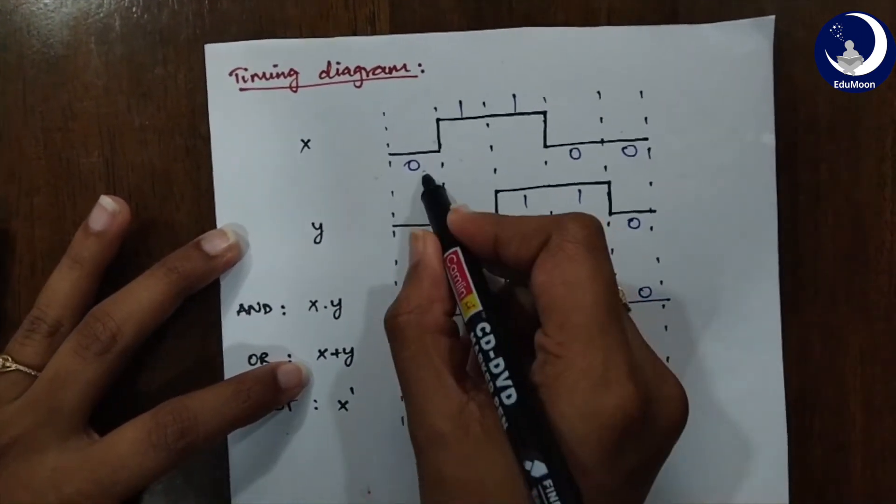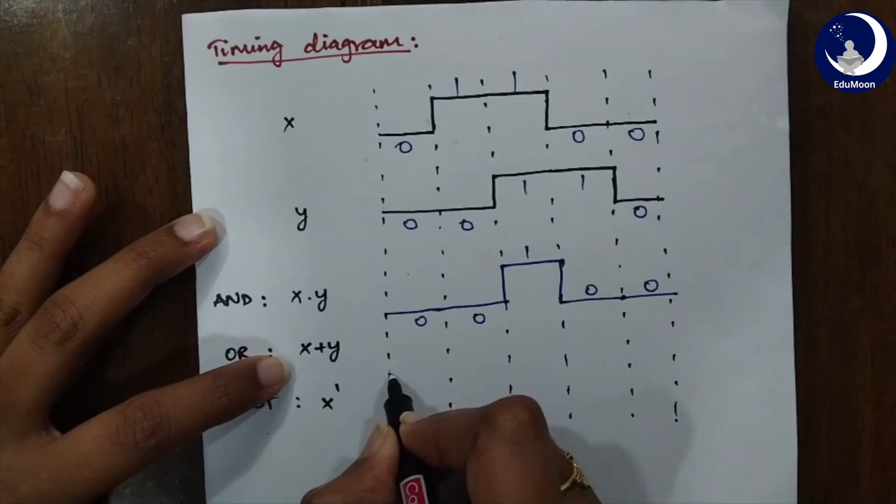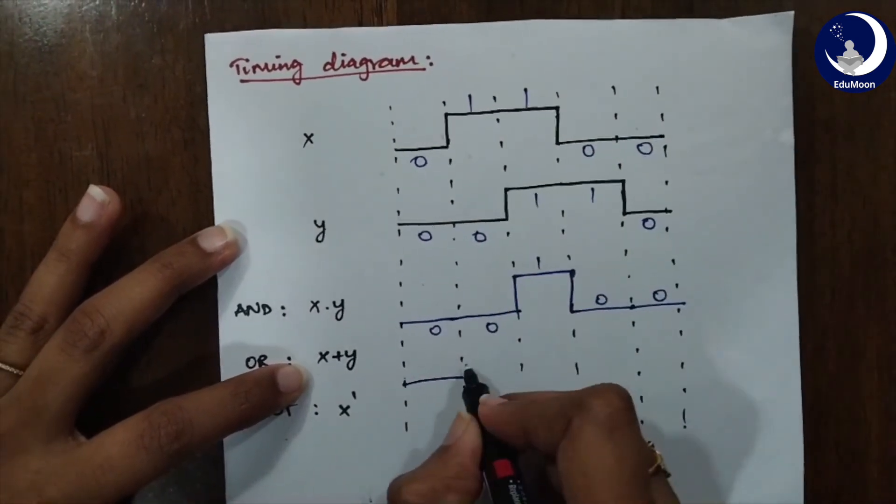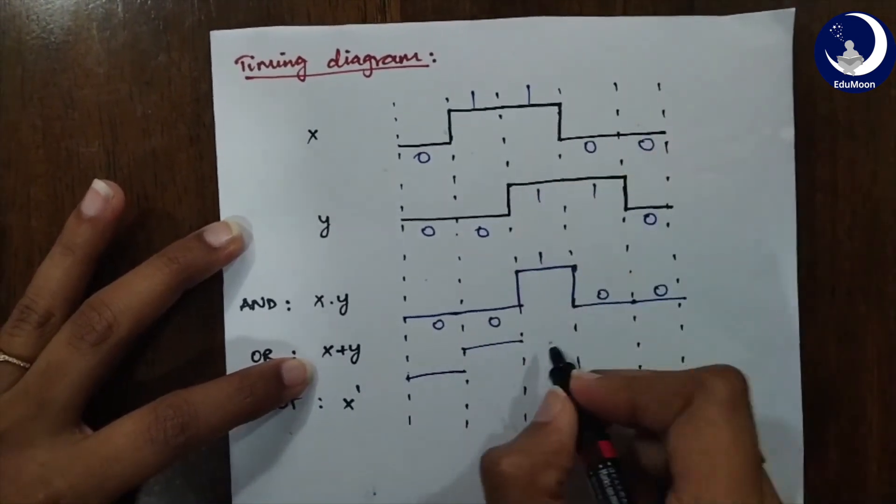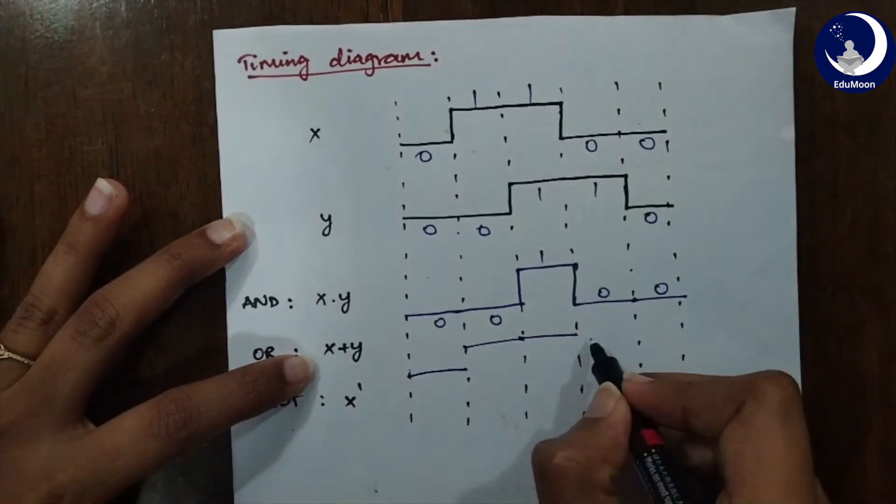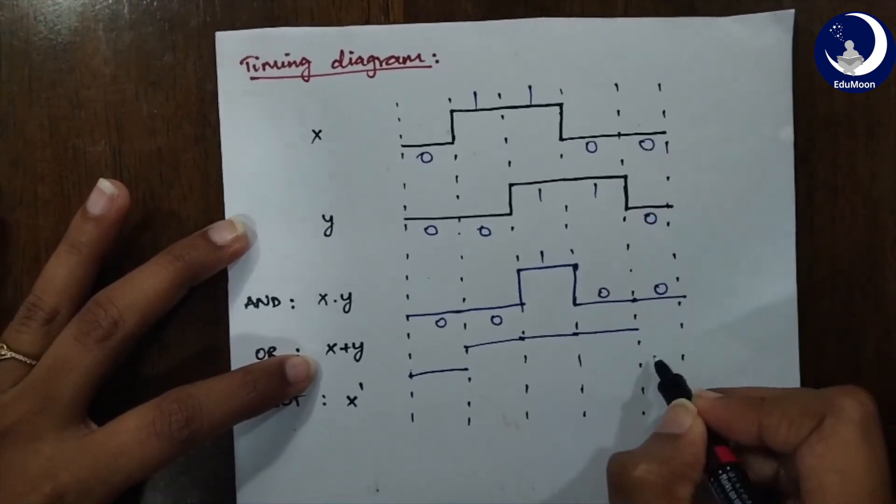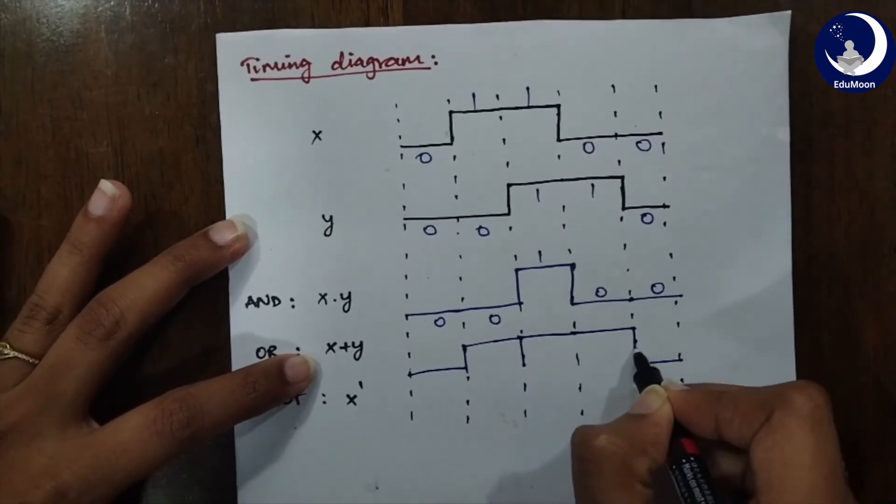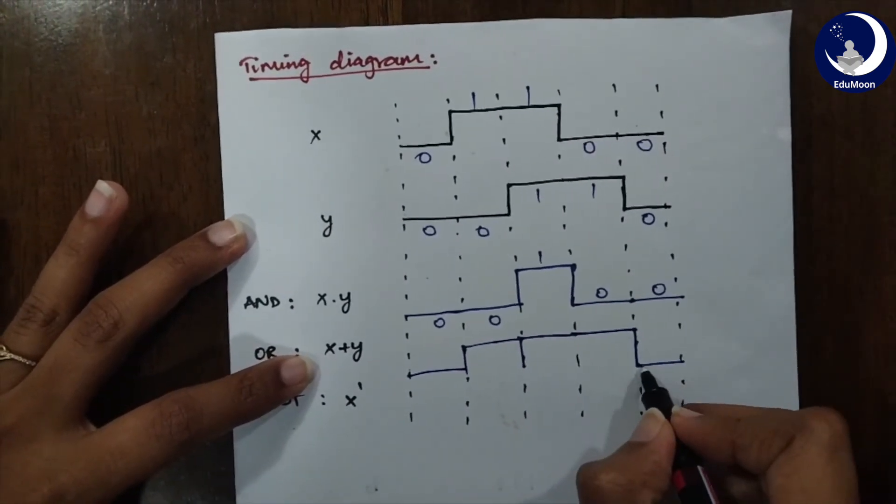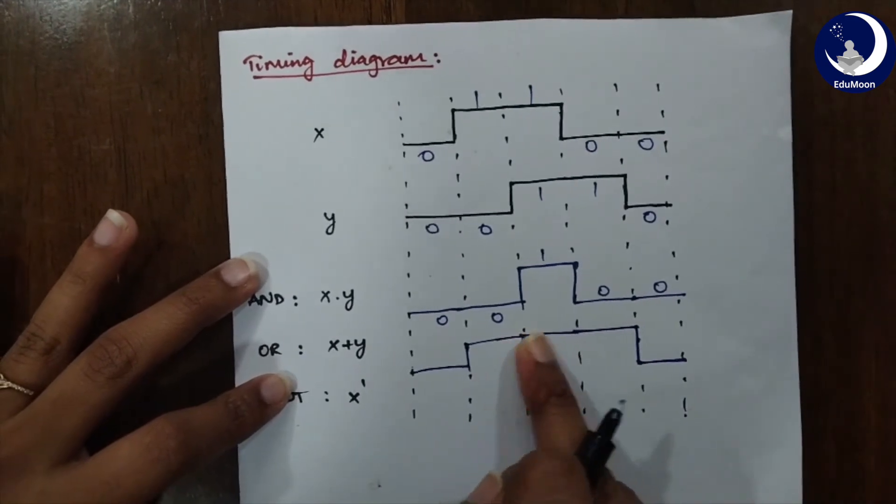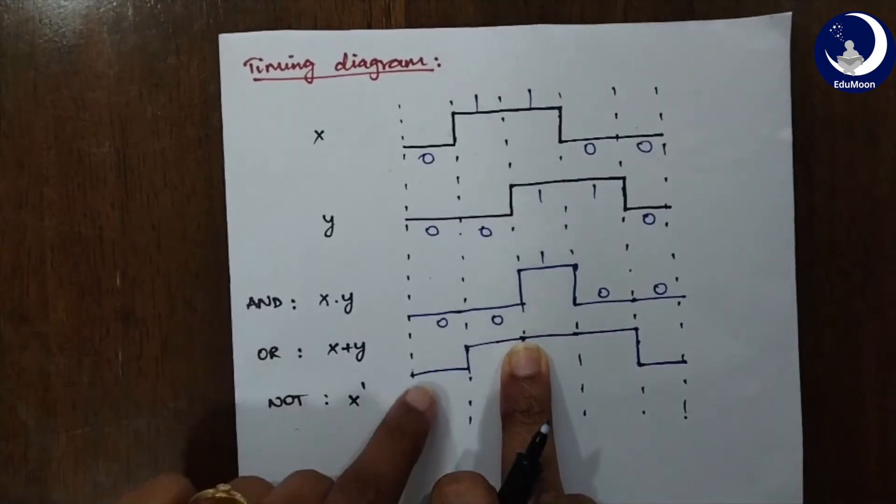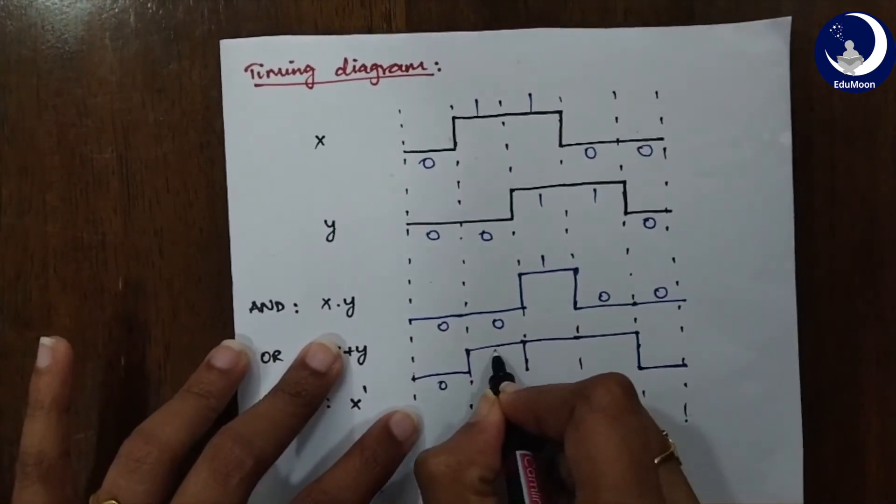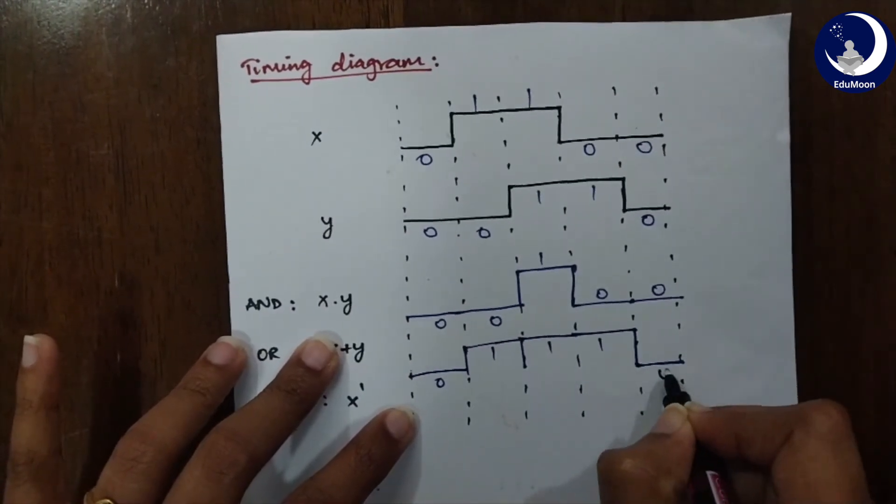Now, OR: 0 plus 0 is 0. 1 plus 0 is 1. 1 plus 1 is again 1. 0 plus 1 is 1. 0 and 0 is 0. So, this will be your OR, just don't consider this, this is wrong. Till here, this is your answer. So, this is 0, this is 1, this is 1, this is 1 and this is 0.